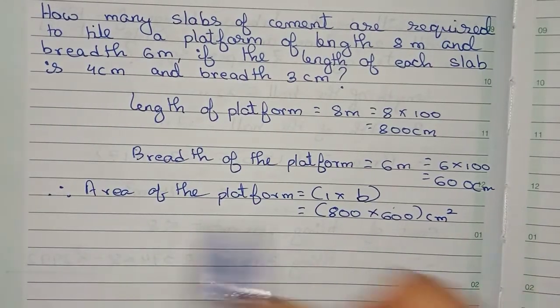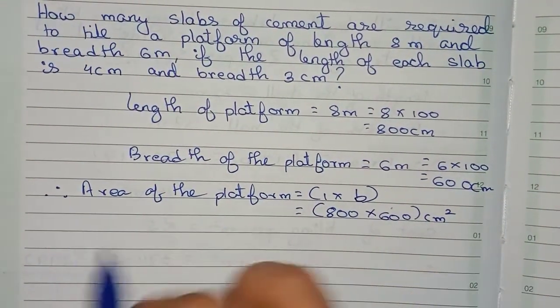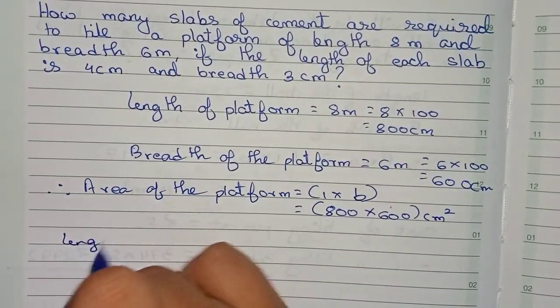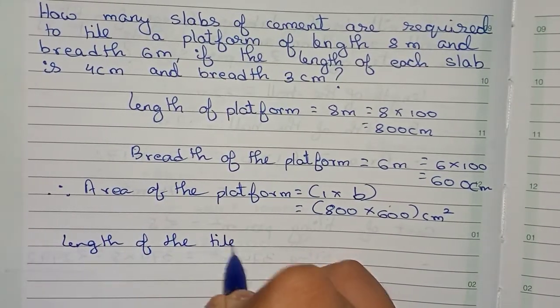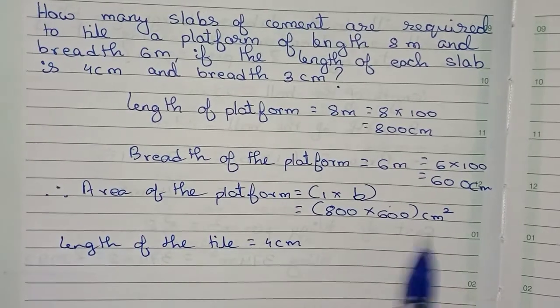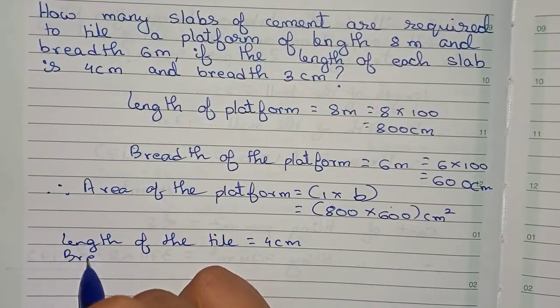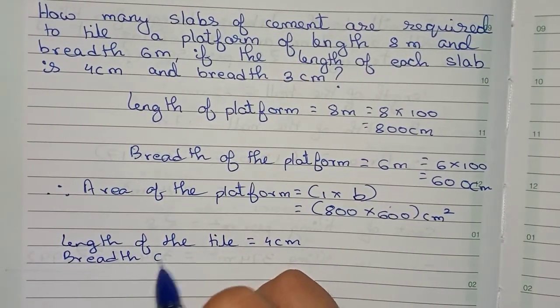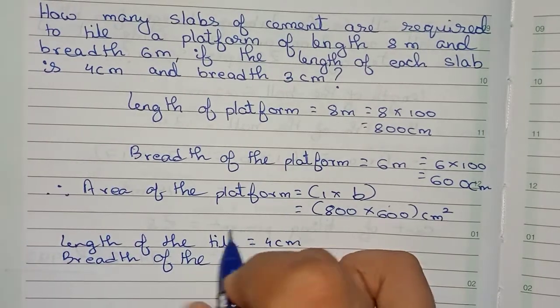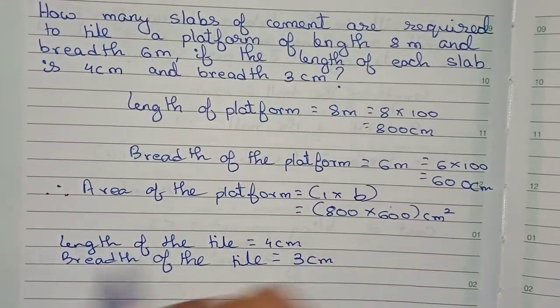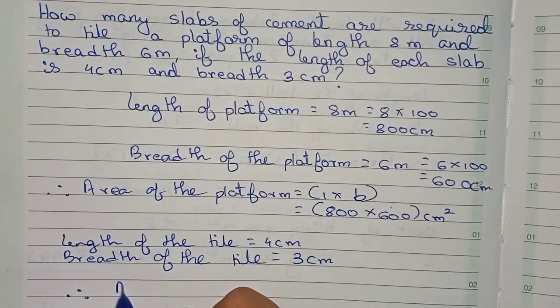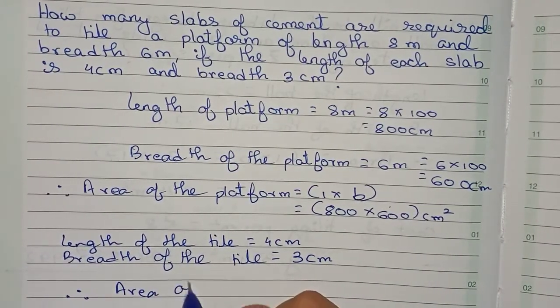Now I'll find the area of the tile. First, length of the tile is equal to 4 centimeters. The breadth of the tile is equal to 3 centimeters. Therefore, I'll find the area of the tile.